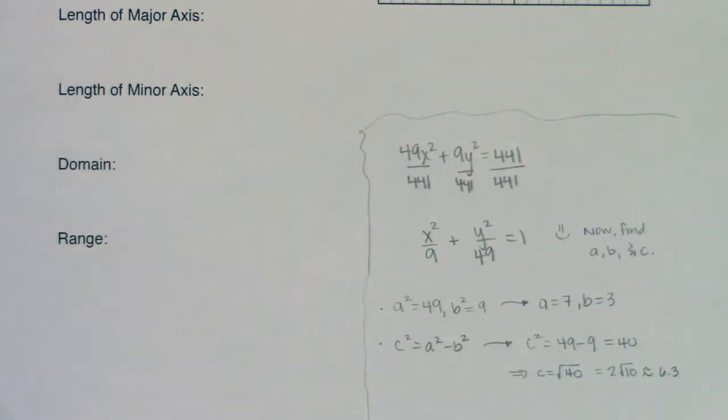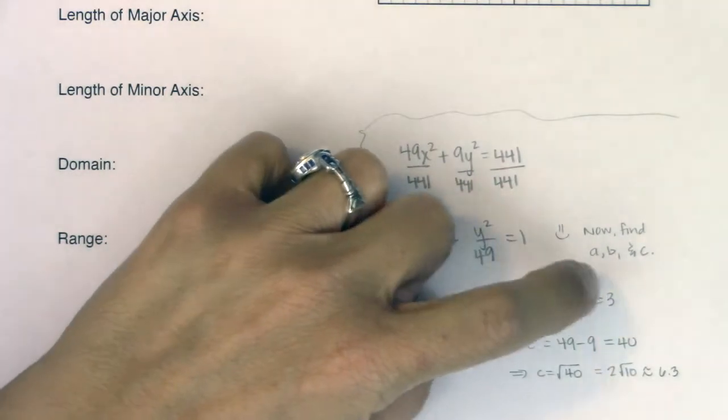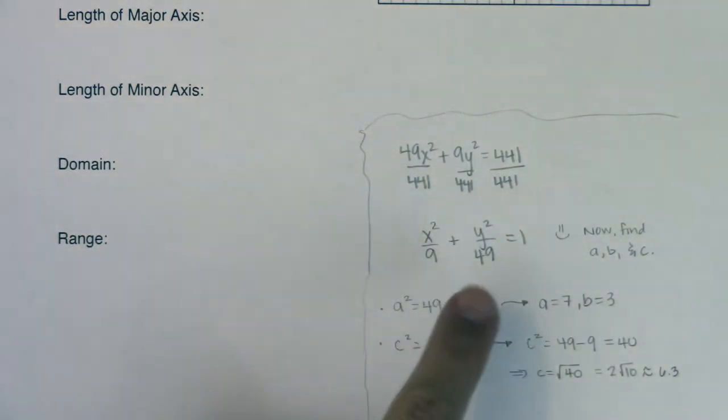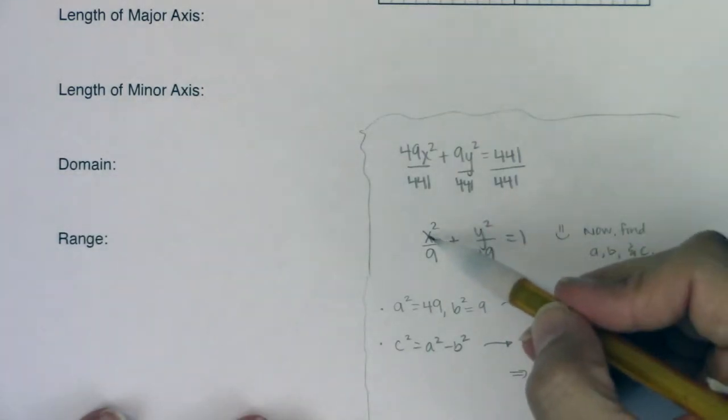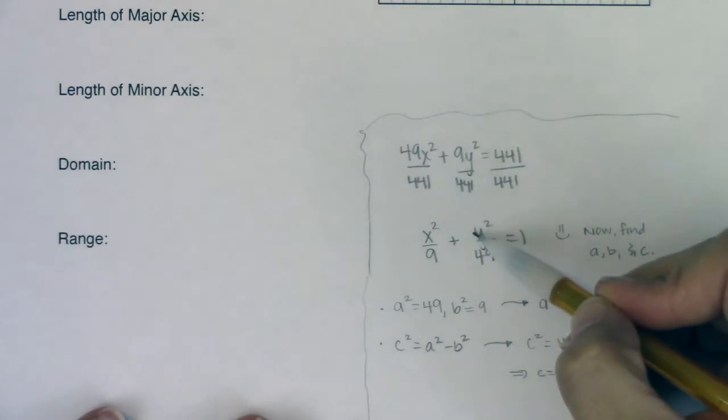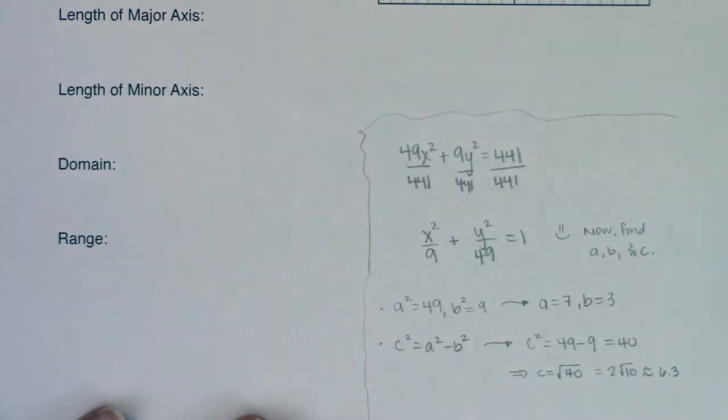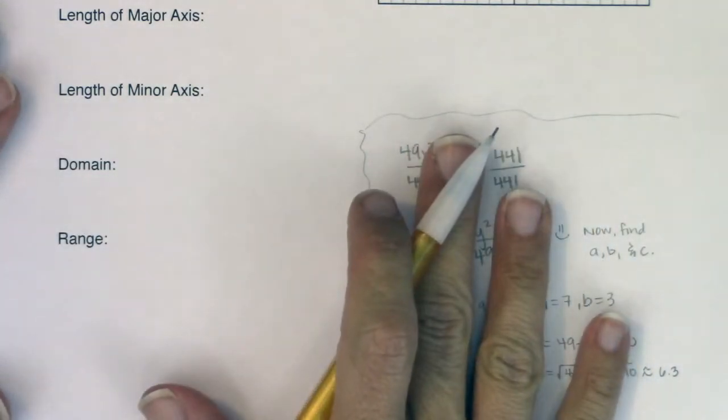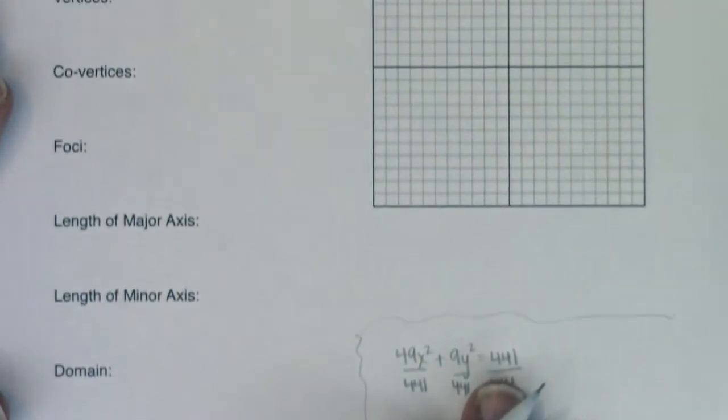So I want you to keep these numbers in mind: a is 7, b is 3, c is 6.3, and here's my equation, x squared over 9 plus y squared over 49 is equal to 1. Now the first thing to take note of is there's no numbers attached to x and y, which means my center's going to be the origin.